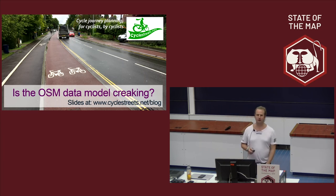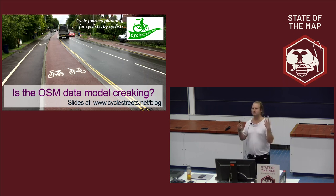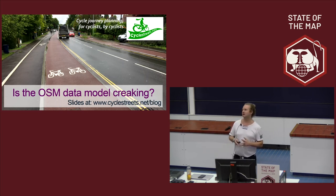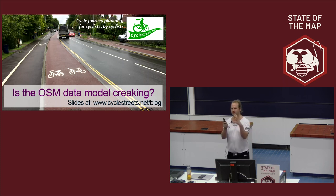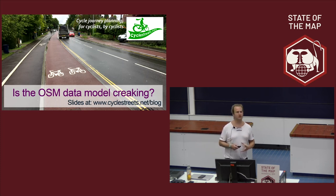I've been using OpenStreetMap for a long time now, and I spend a lot of time looking at the data model and how we route over it and how cartographically it's represented as well. I believe the time has come to look at the data model and ask: are we missing a certain couple of concepts? Because I think there are things that are actually quite hard to do, and there are compromises in the model.